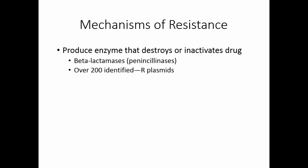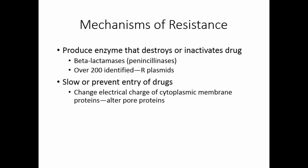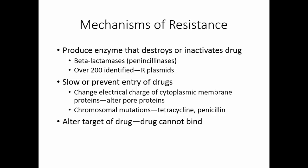This type of resistance tends to come on R-plasmids. We can slow or prevent the entry of drugs into the cell — this is usually accomplished by changing the electrical charge of the cytoplasmic membrane proteins. We alter the pore proteins, and this sort of change is usually due to a chromosomal mutation. We've seen this kind of resistance to tetracycline and penicillin.